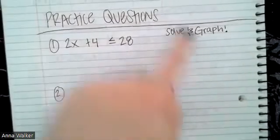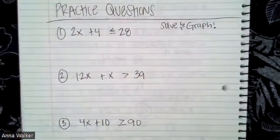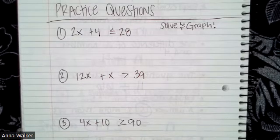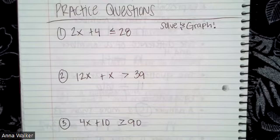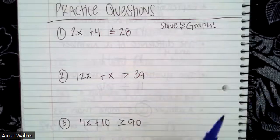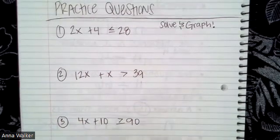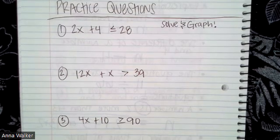So here are your practice problems. I would like for you in these practice problems to please solve and graph them. So find the set of solutions and then also graph or represent that solution set on a number line. So your three problems are 2x plus 4 is less than or equal to 28, 12x plus x is greater than 39, 4x plus 10 is greater than or equal to 90. You can check your answers for the solution sets in the table of contents. If you want to see what a graph looks like, I would encourage you to come bring your notebook to your teacher to check. But as always, we're here to help you and answer any questions. If you're still struggling with inequalities, please make sure you go back and watch the introduction video. And I hope you'll have a great day. Bye.